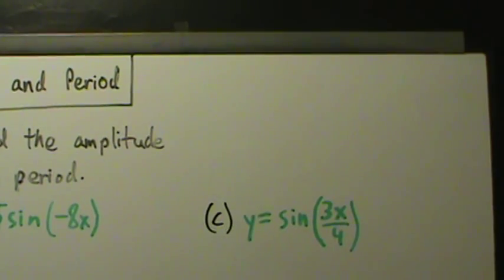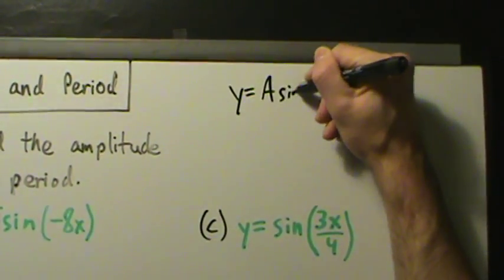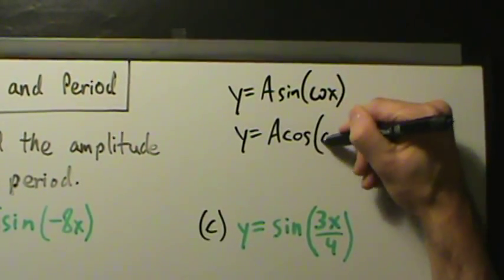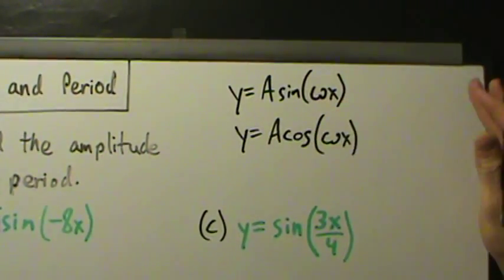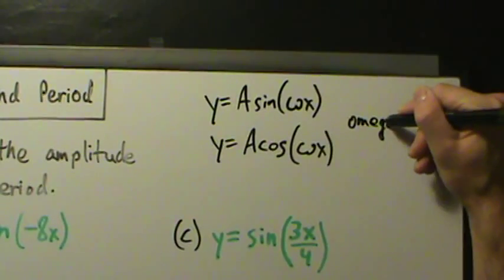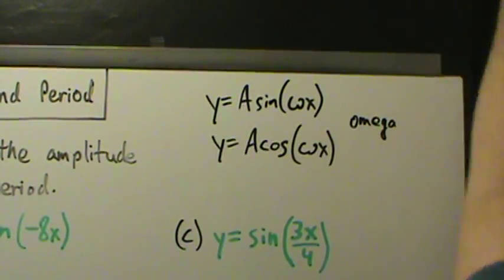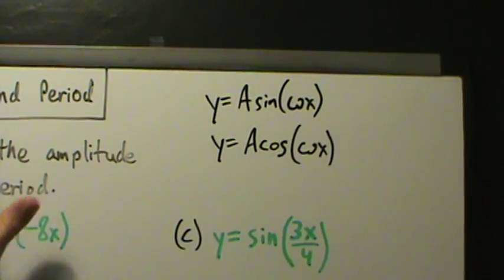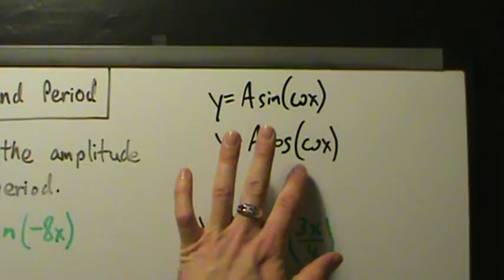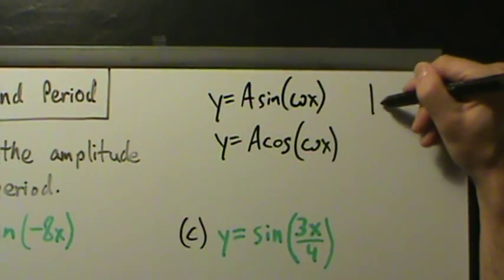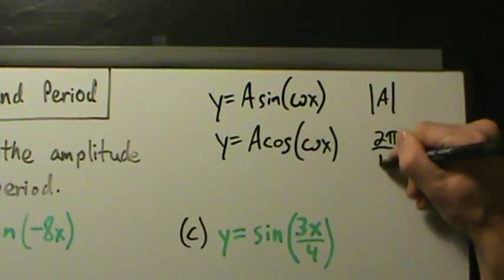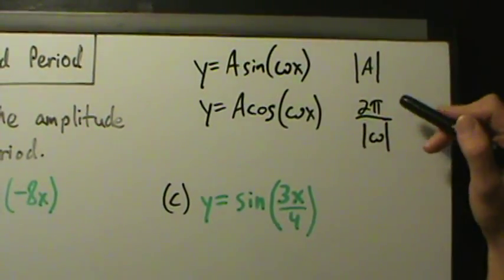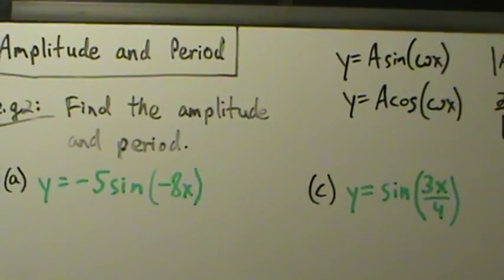Just in general, we have something like y equals A times the sine of omega x, or y equals A cosine omega x. Omega is the lowercase Greek letter — not a w, but omega. We could also have a vertical shift, but vertical shifts don't affect the amplitude or period. The amplitude is just the absolute value of A, and the period is 2π divided by the absolute value of omega. It really is that simple, though sometimes you may need to do some slightly messy algebra with fractions.